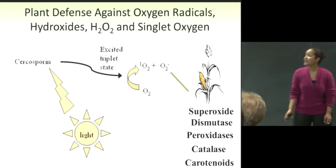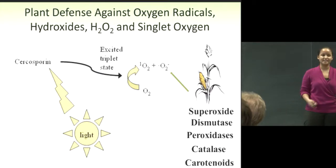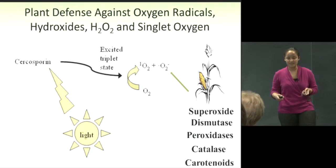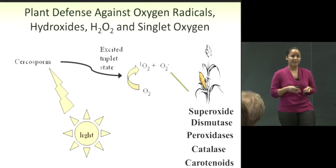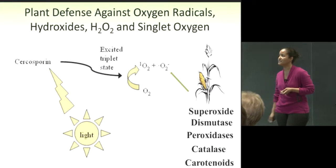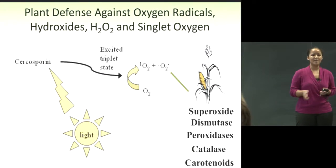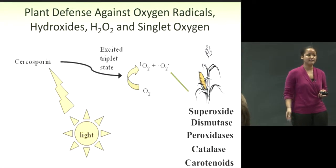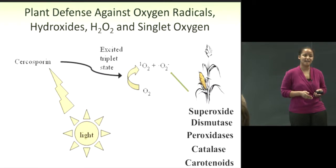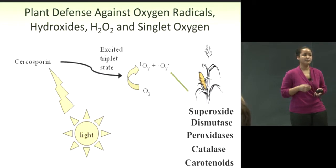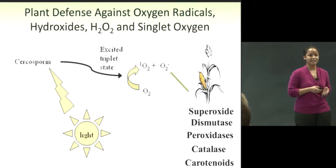Since the plant often encounters oxygen radicals, hydroxides, and hydrogen peroxides, it's predicted that enzymes such as superoxide dismutase, peroxidase, and catalase manage a lot of that. But singlet oxygen is not so often encountered, so it's hypothesized that carotenoids deal with that by quenching the singlet oxygen and reducing its ability to damage the cell.